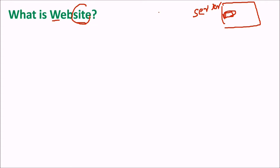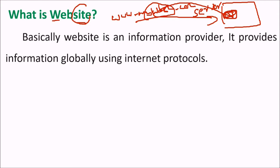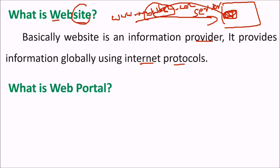You choose to place your HTML pages, which can be accessed over HTTP, in that server space. That location containing your HTML pages is known as the website. Since we are not very good with IP numbers, we use a name like www.mywebsite.com. That name represents the IP address of that location. Basically, a website is an information provider that provides information globally using internet protocols.